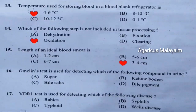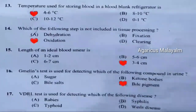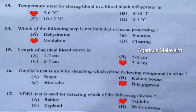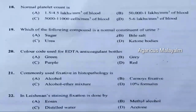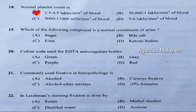Sixteenth question: Melin's test is used for detecting which of the following compound in urine. Correct answer is option D — biopigment. Seventeenth question: VDRL test is used for detecting which of the following disease. Correct answer is option B — syphilis. Eighteenth question: Normal platelet count is. Correct answer is option A — 1.5 to 4.5 lakhs per millimeter cube of blood.